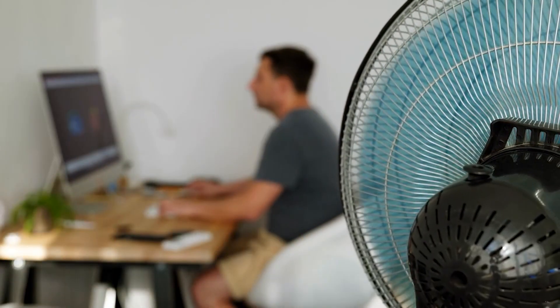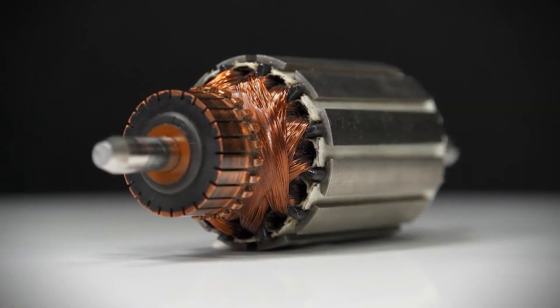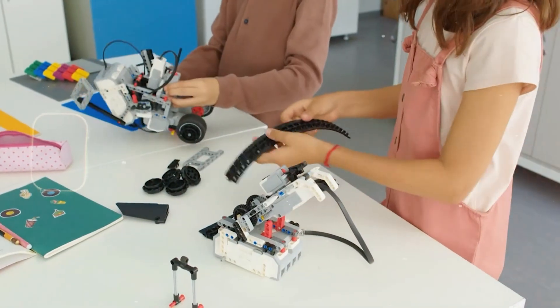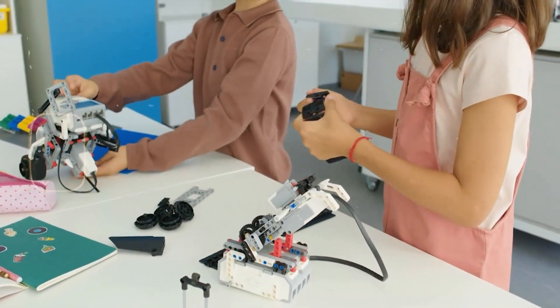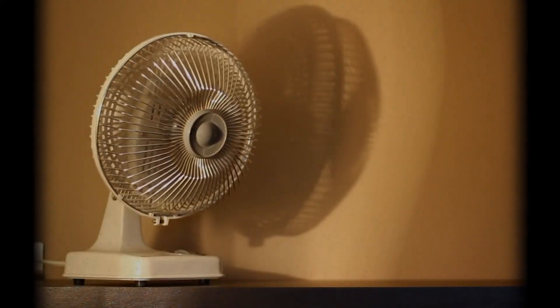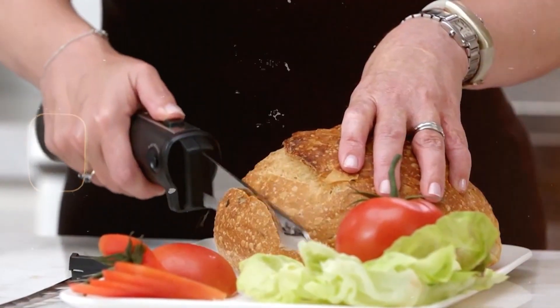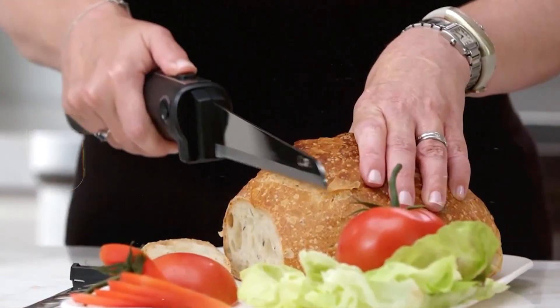All throughout a modern household, there are machines quietly working in the background, many of them powered by something small but extraordinary. Children's toys rely on it to bring wheels to life. A table fan uses it to move air across a room. Toothbrushes, hair dryers, blenders, and even an electric cutting knife all depend on the same hidden mechanism.